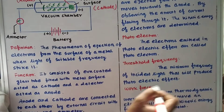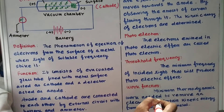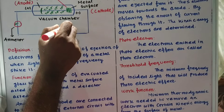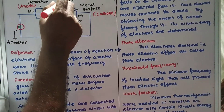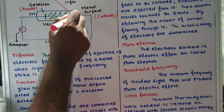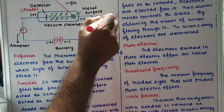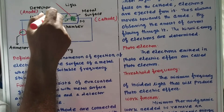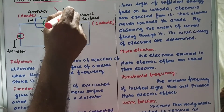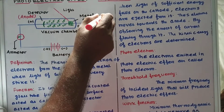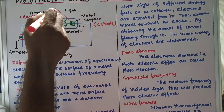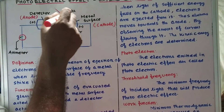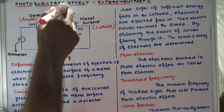Work function is the minimum thermodynamic work needed to remove an electron from the surface of the metal. The incident light does two things: first, it removes the electron from the metal surface acting as cathode, and second, it gives a certain kinetic energy to the ejected electron. The work done by incident light at the threshold frequency is called the work function.